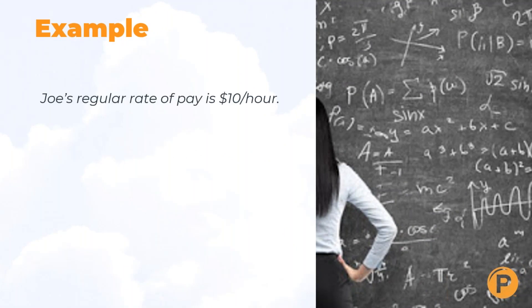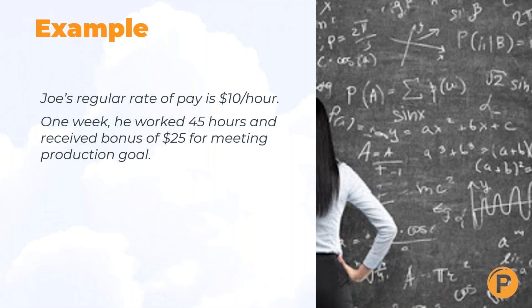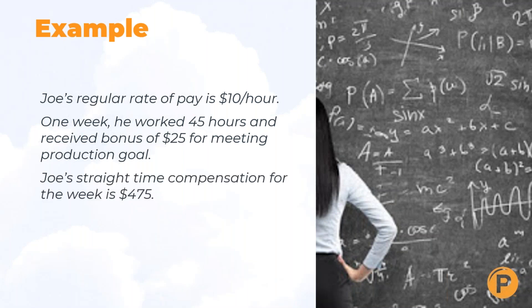Let's look at an example. Joe's rate of pay is $10 an hour. One week he works 45 hours and received a bonus of $25 for meeting a production goal. Joe's straight-time compensation for the week is $475: 45 hours × $10 = $450, plus the $25 bonus. That $475 is his total straight-time compensation for the week.